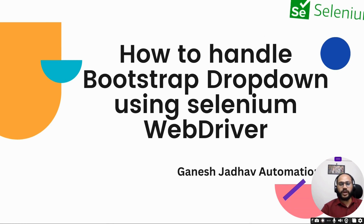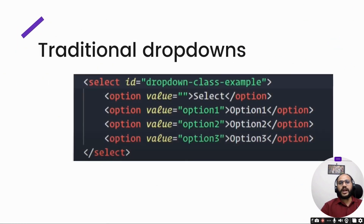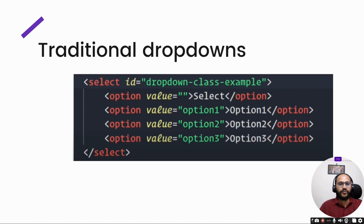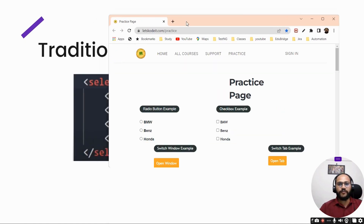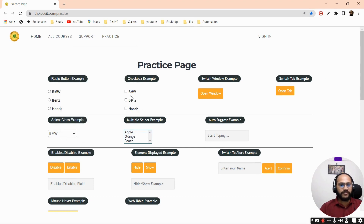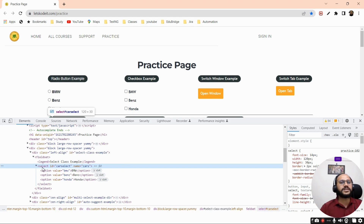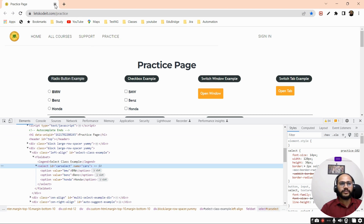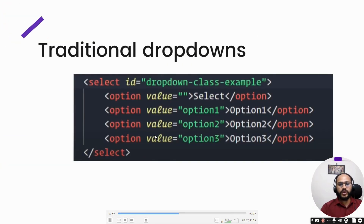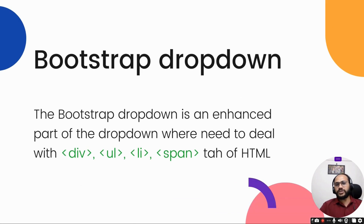If you're talking about the normal dropdown, you can see this is a traditional dropdown which is started with the select tag — not a class, but a select tag in HTML. For automation in Selenium WebDriver, we have a Select class. Here on this website, if you inspect the dropdown element, it starts with a select tag. This is your traditional dropdown behavior. But nowadays everyone is using Bootstrap dropdowns.